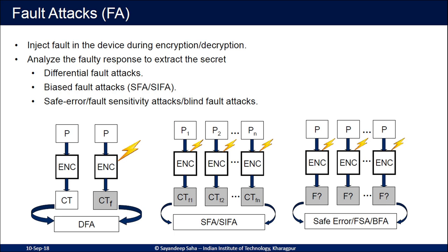In real devices, the faults are highly biased — over the entire possible fault space, only some faults occur repeatedly and many never occur. Using the statistical bias in the distribution, an adversary can launch statistical fault analysis or statistical ineffective fault analysis, injecting faults on several different plaintexts and gathering faulty or correct ciphertexts to get the secret. There also exists another class where the adversary doesn't require knowing the ciphertext — just whether the ciphertext is faulty or not. Prominent members of this class are safe error attacks, false sensitivity analysis, and design fault attacks.